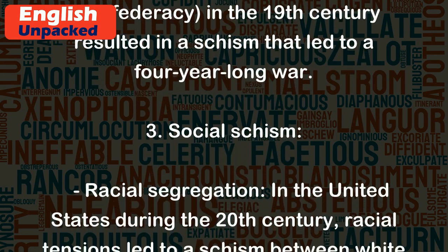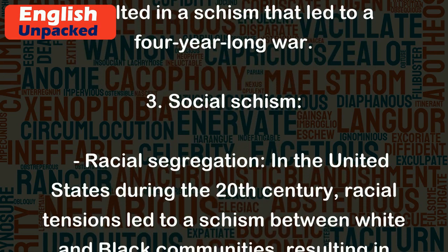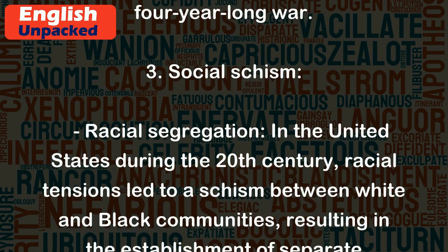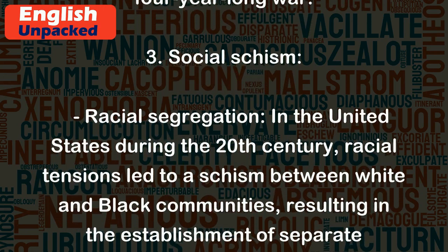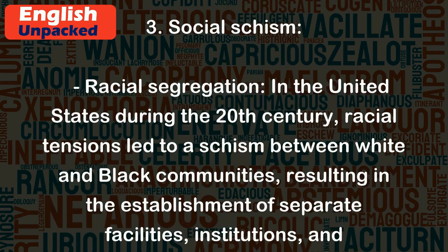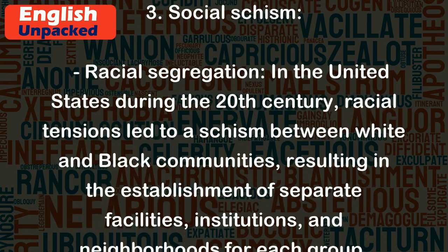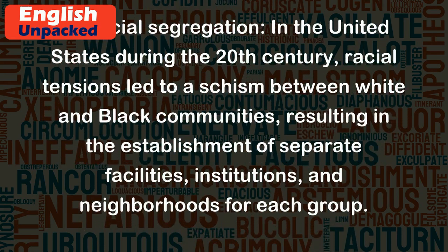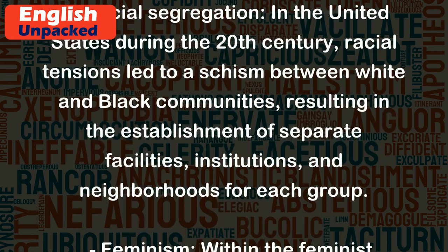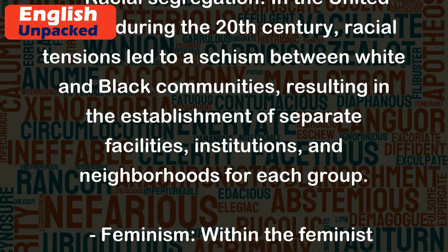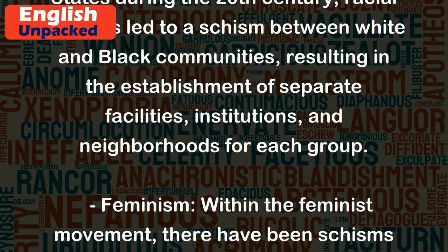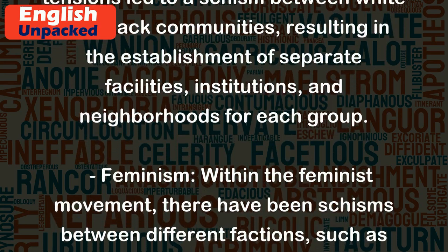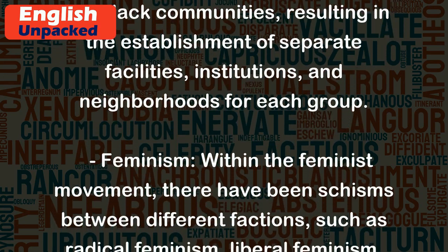3. Social Schism: In the United States during the 20th century, racial tensions led to a schism between white and black communities, resulting in the establishment of separate facilities, institutions, and neighborhoods for each group.